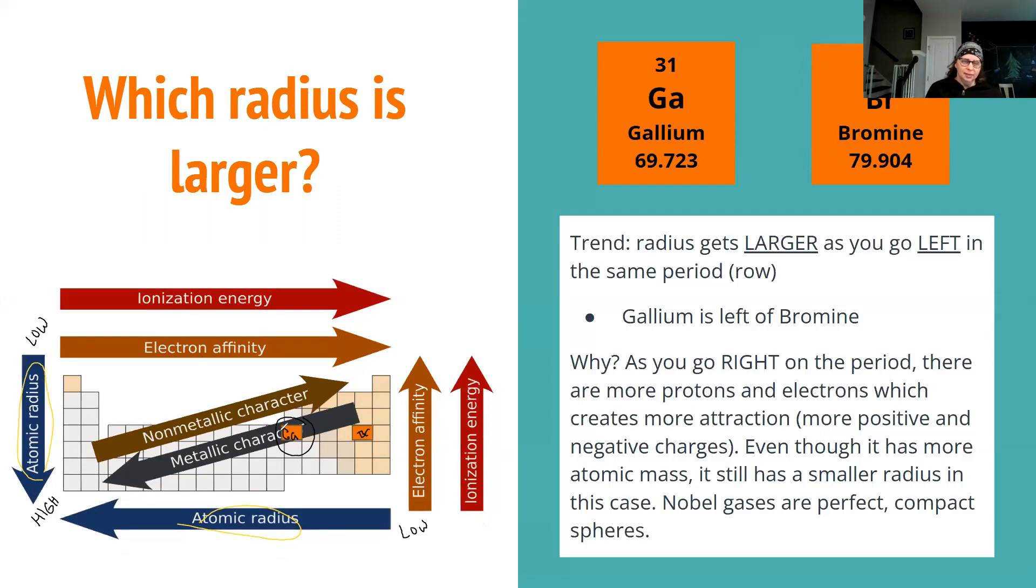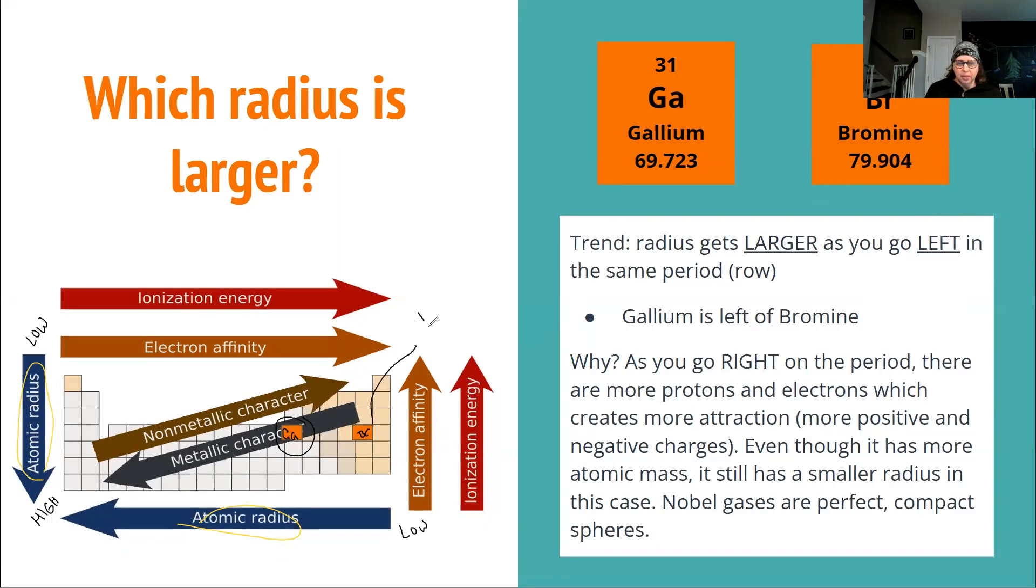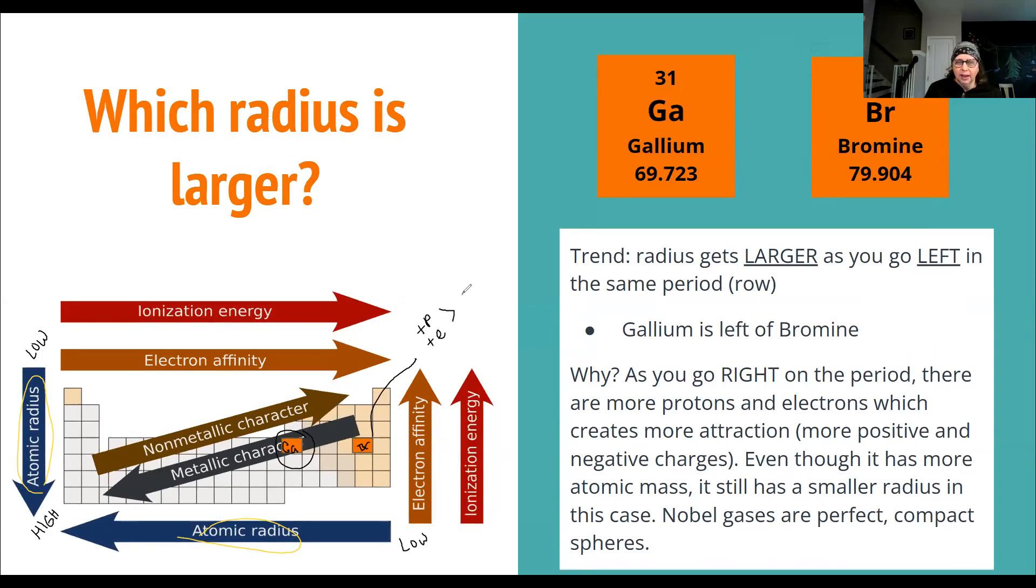And you might think, but wait, that doesn't make sense. Bromine has more mass, but he also has more protons and more electrons. So it's like he's a stronger magnet. He's able to pull in those positive and negative particles because he has more protons and more electrons. Protons are positive, electrons are negative. So he's making a stronger magnet on that right side, so he can actually be more like a perfect compact space. So your noble gases here are going to be your smallest and most perfect atoms of the periodic table.